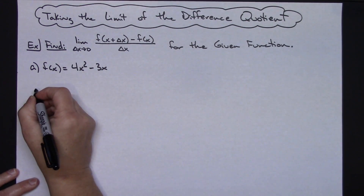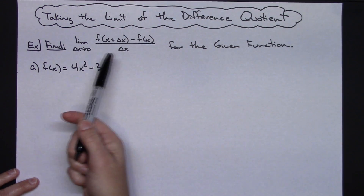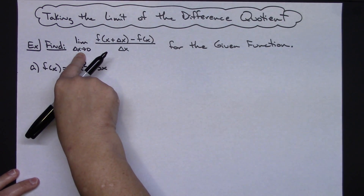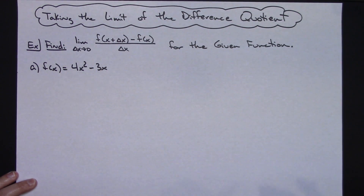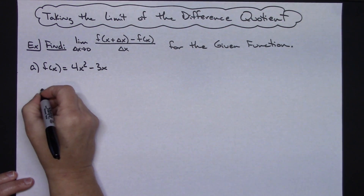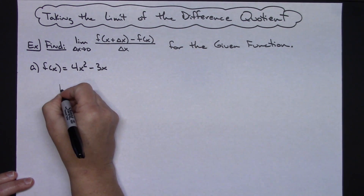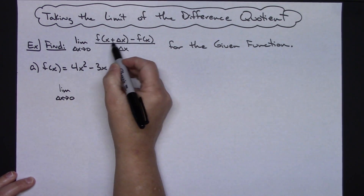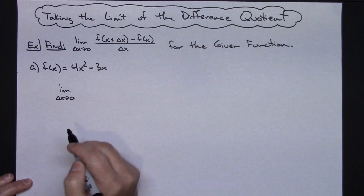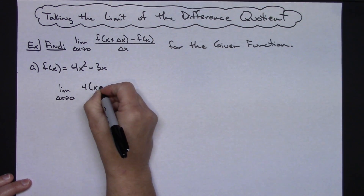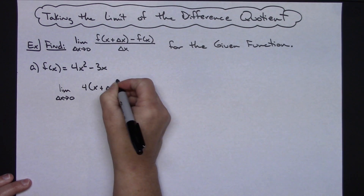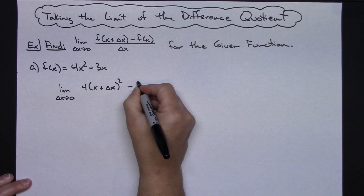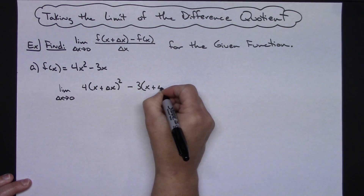Every line is going to have the limit as delta x approaches zero in front of it, all the way up to the very end until I actually do a direct substitution. So I'm going to have the limit as delta x approaches zero, and I'm going to take x plus delta x and plug it into both of those spots: 4 times (x + delta x) quantity squared, plugging it in the first spot, minus 3 times (x + delta x), plugging it in the second spot.